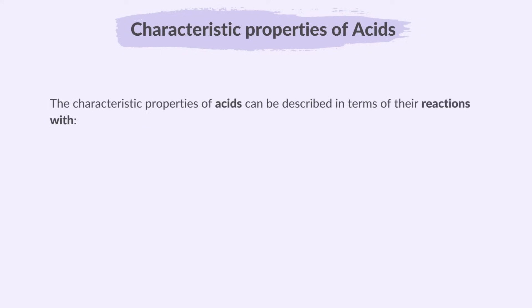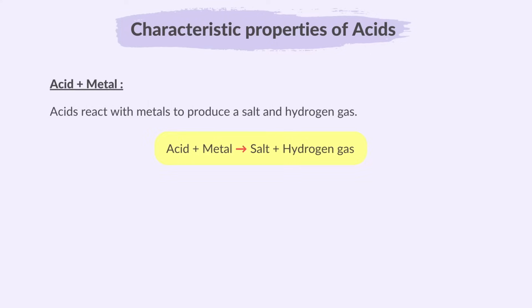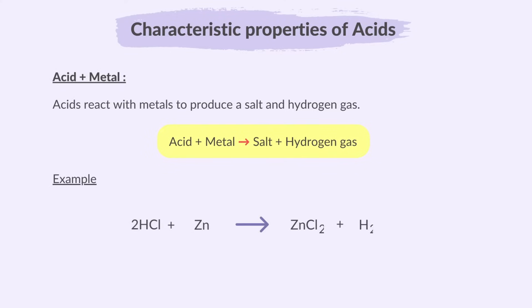The characteristic properties of acids can be described in terms of their reactions with metals, bases, and carbonates. Acids react with metals to produce a salt and hydrogen gas. For example, hydrochloric acid reacts with zinc metal to produce zinc chloride, which is a salt, and hydrogen gas.